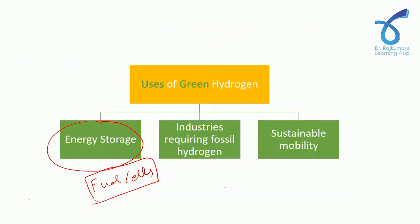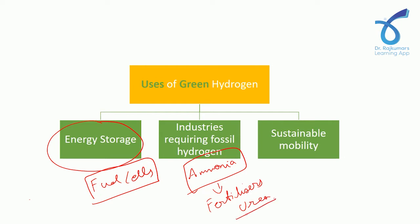Fuel cells are having wide application — they are being used to power vehicles. Hyundai, for example, is manufacturing large-scale fuel cell cars, and it is going to become the next source of energy for automobiles. Another important use is in industries requiring large-scale hydrogen, such as in the manufacture of ammonia. Currently, this hydrogen comes from fossil fuels, but with green hydrogen we can replace it and reduce emissions. Ammonia is a very important component for fertilizers, and in India most fertilizer — especially urea — is manufactured with ammonia.